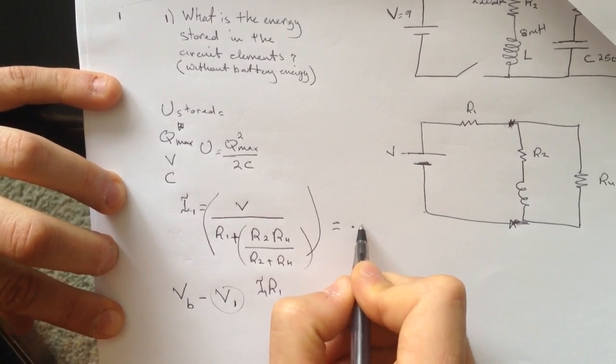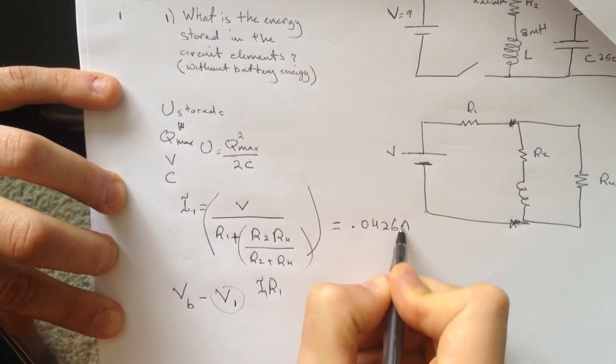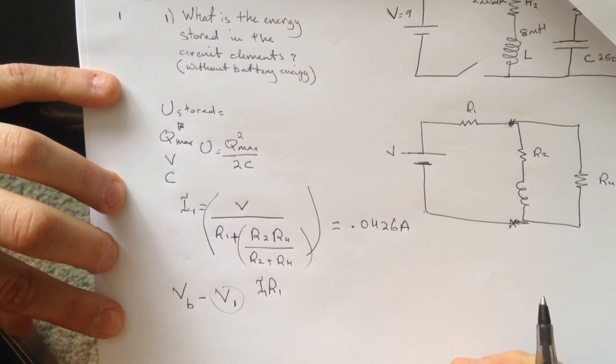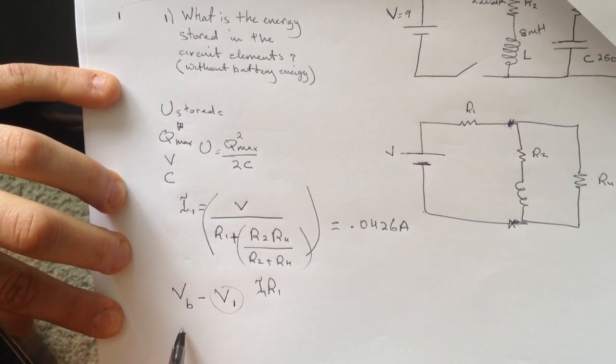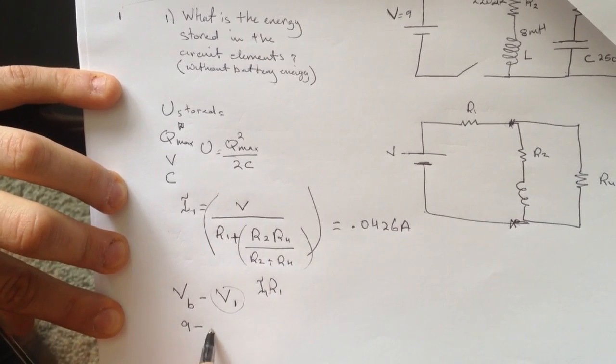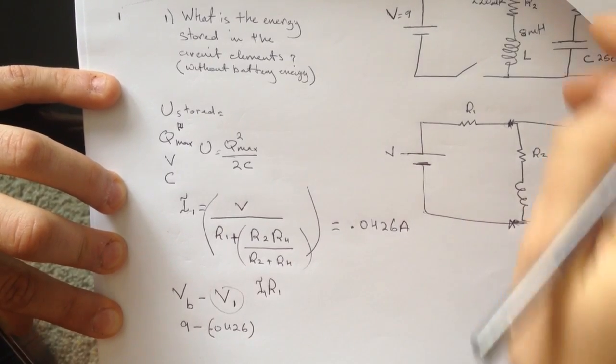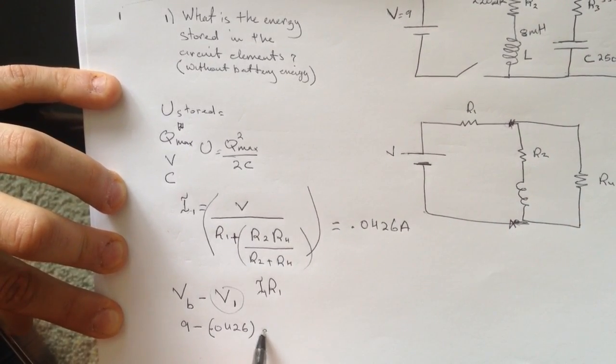I'm going to give you some of my numbers to make it clear. I got here for I is 0.0426 ampere. So the VB is 9 minus the I that I got here, 0.0426, times the resistor. The resistor was 60 ohm.